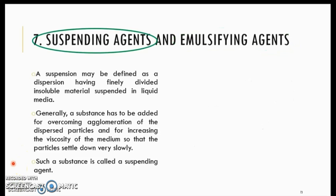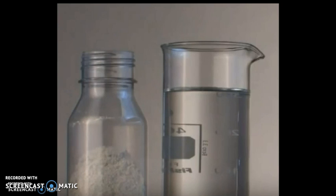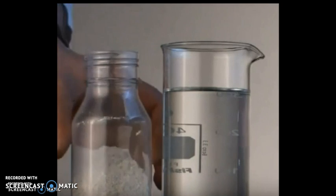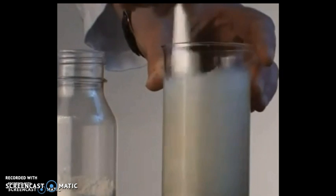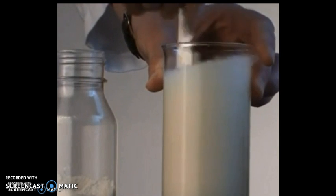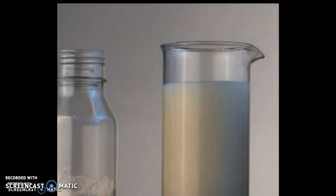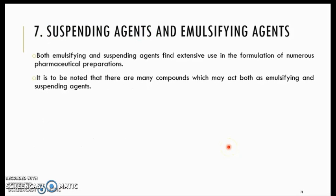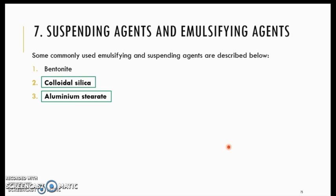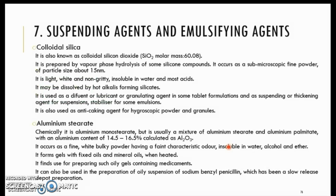Suspending agents, on the other hand, are used to mix a substance or powdered substance that is not miscible in any solution. By adding a suspending agent, this powder can now mix in the solution and stay stabilized in that form. Suspending agents and emulsifying agents are used in numerous formulations, with examples and a simple monograph provided.